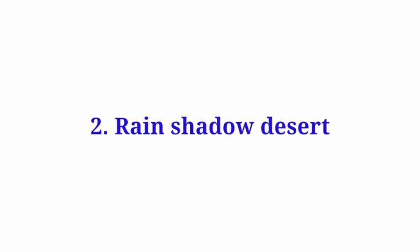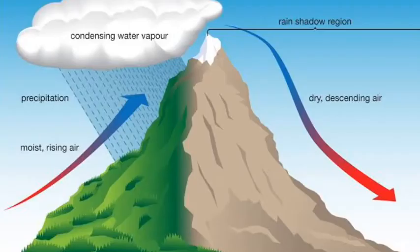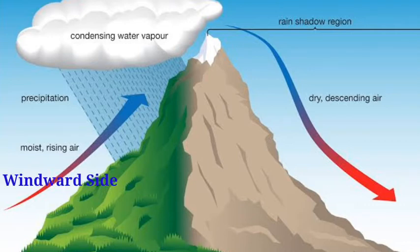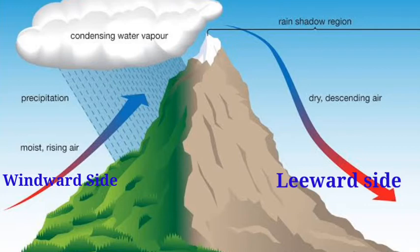The second type is rain shadow desert. There are two sides of a mountain: one is the windward side and the other is the leeward side. The windward side of the mountain faces a lot of rainfall as a result of its location, while the leeward side is the opposite side, which is dry.